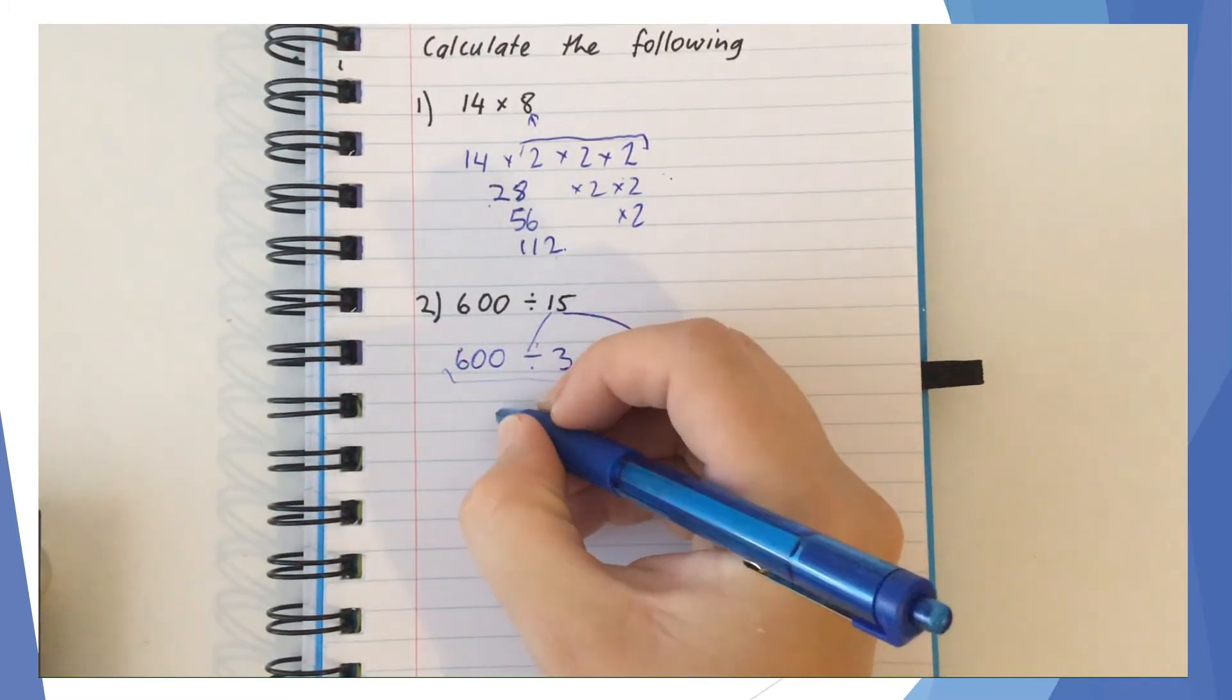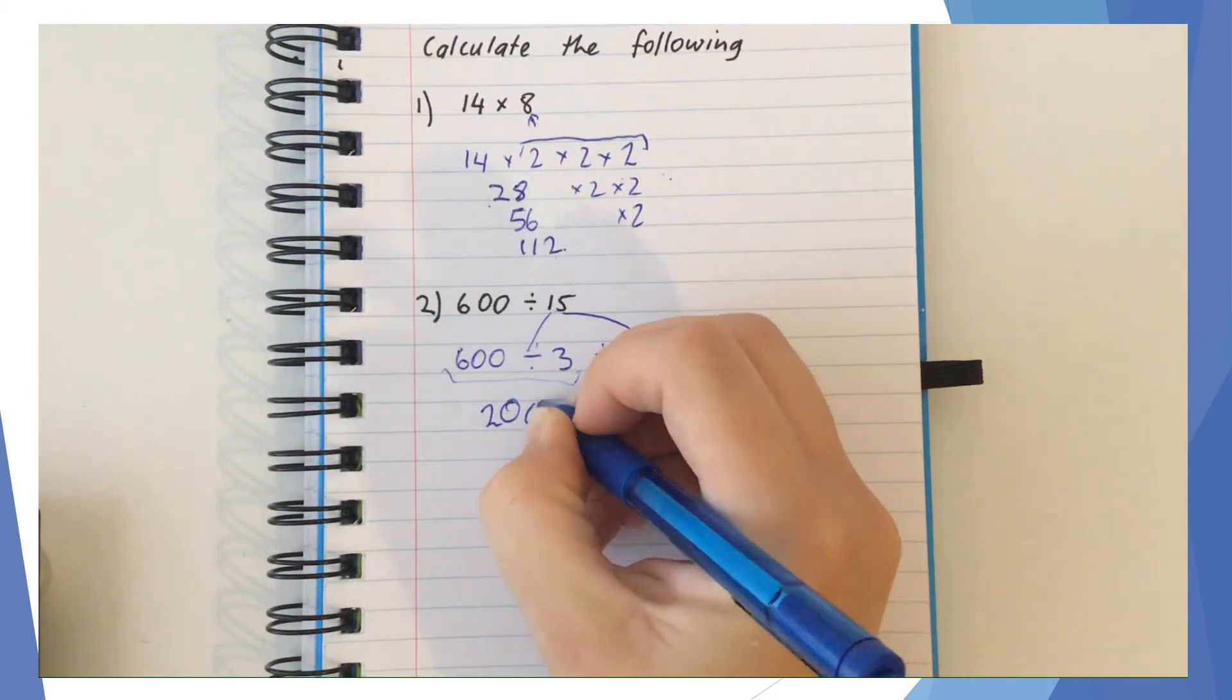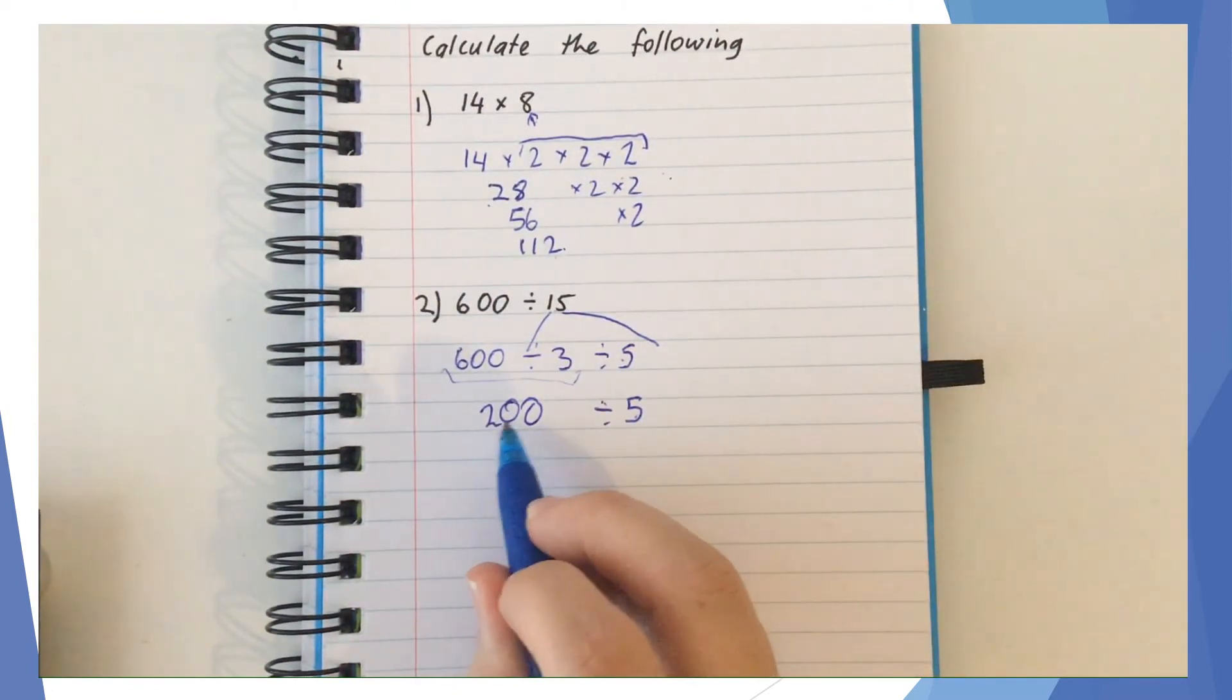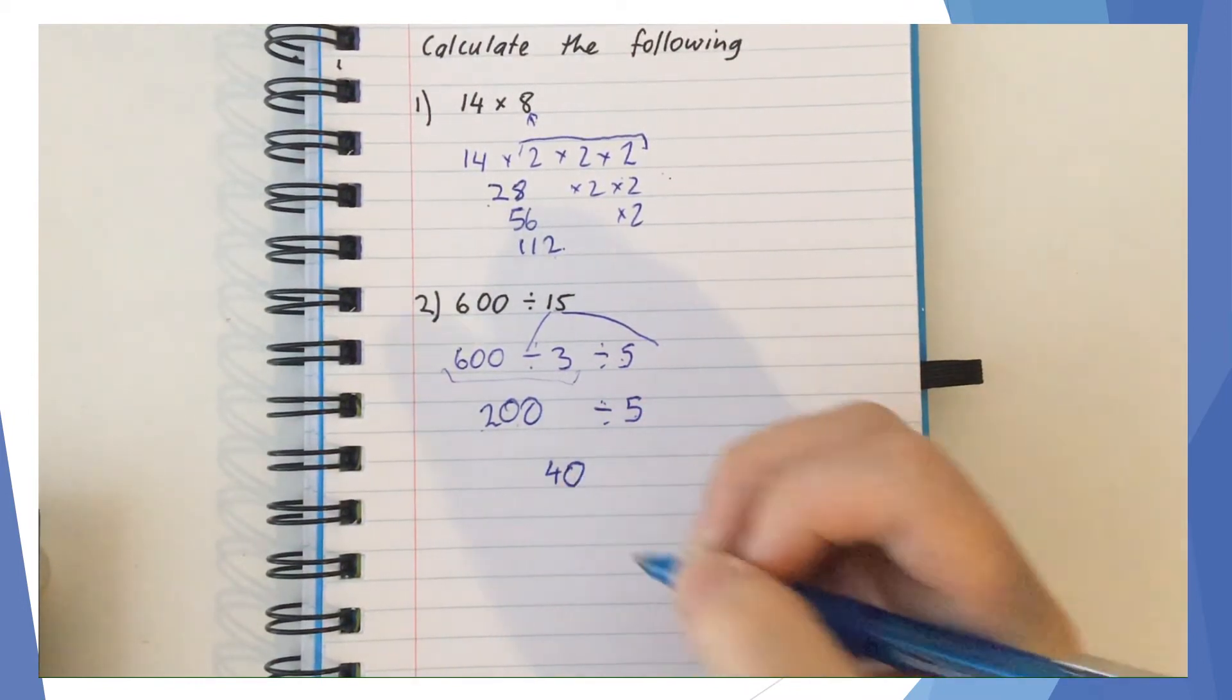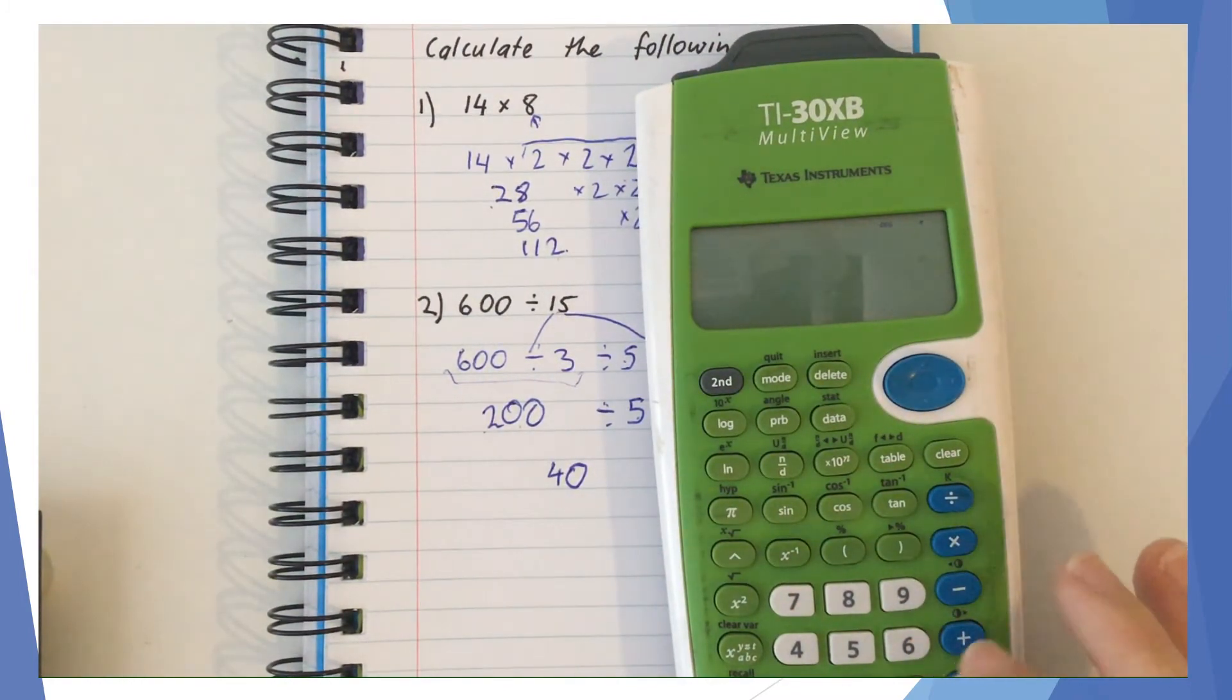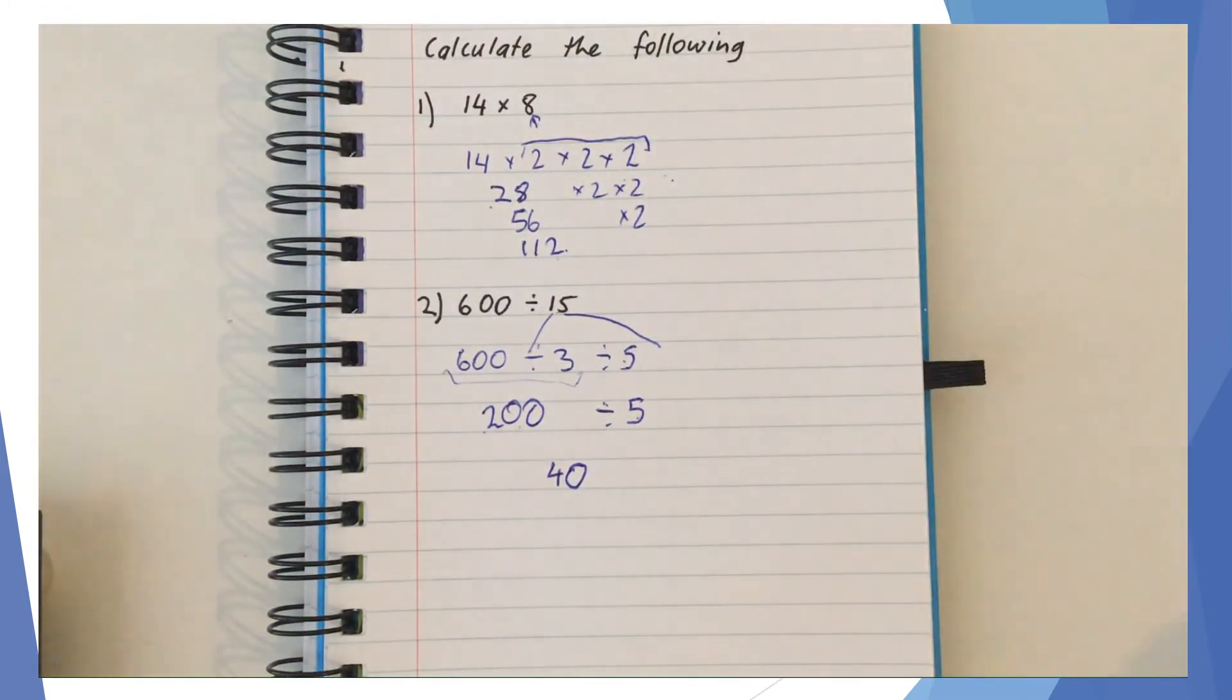If I do 600 divided by 3, that's the same as 6 divided by 3 is 2, and I need to leave the 100, so I've now got 200 divided by 5. Then I can just do 20 divided by 5 is 4, and there's one more zero I have to attend to. If I check my answer, 600 divided by 15 gives me 40, so the answer is correct.